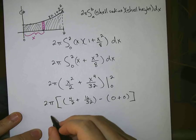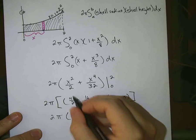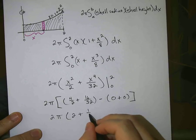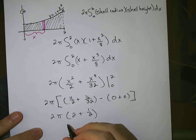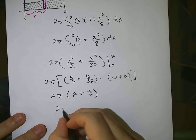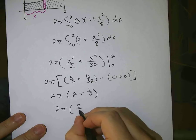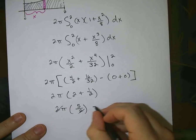Okay, so that gives you 2 pi, 2 plus 1 half, 2 plus 1 half is 5 halves, so you get 2 pi times 5 halves, 2's cancel, and you get 5 pi.